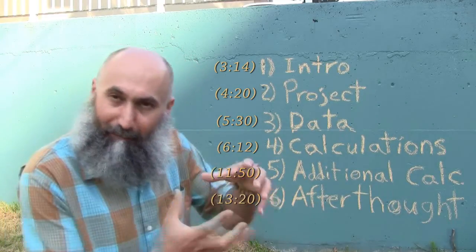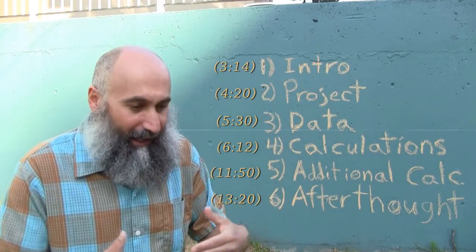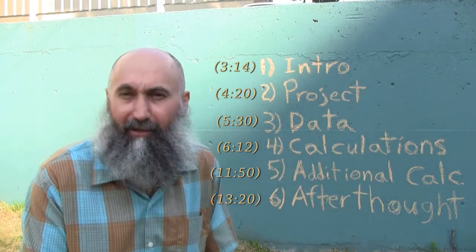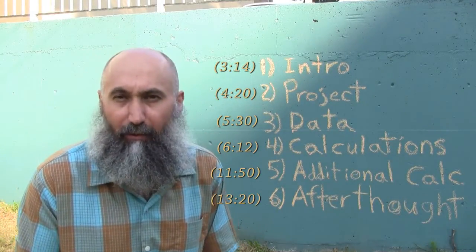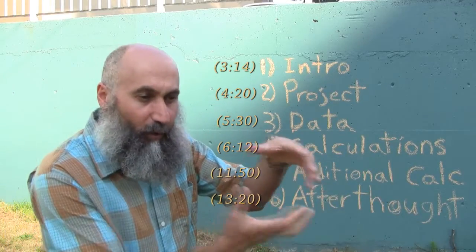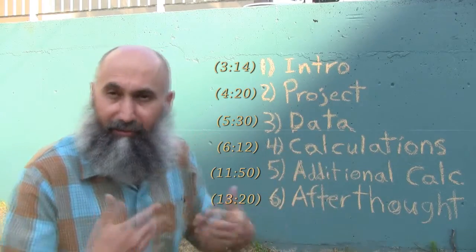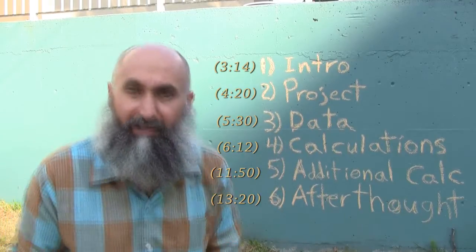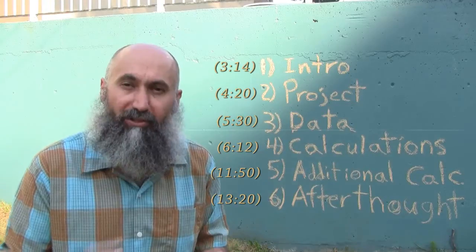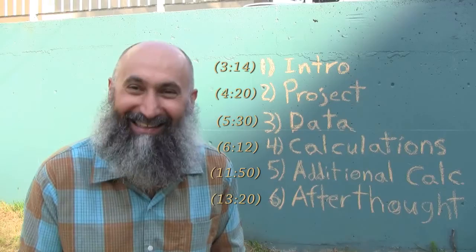Part four is basically the meat of what's contained in this video. Part five is some additional calculations I ended up doing. Whenever you collect data and set parameters, you might have an idea of what you want to use that data for. With any data set, you can always do additional calculations. That's the way it works with science, economics, anything.